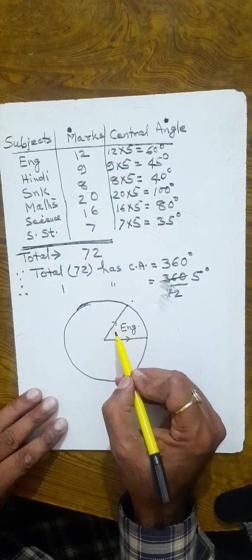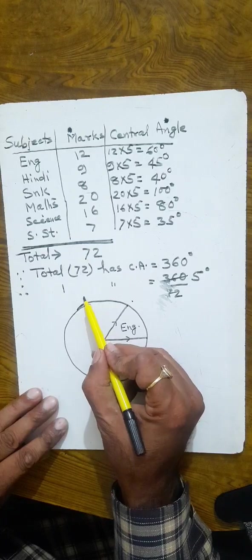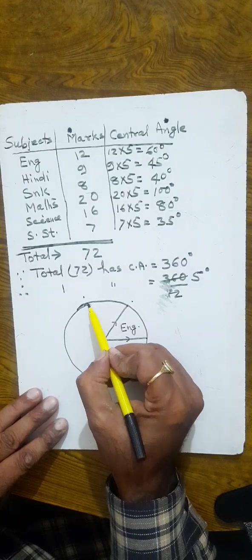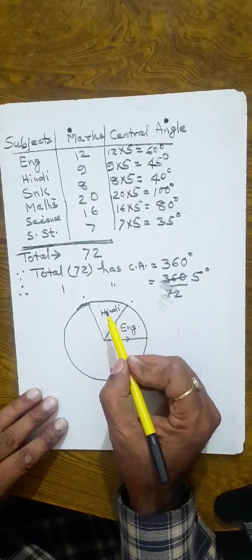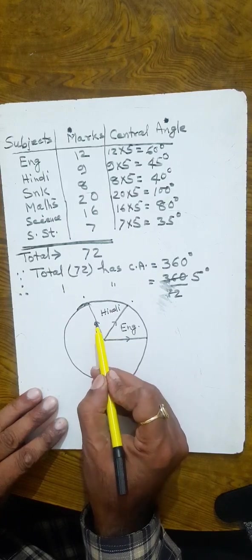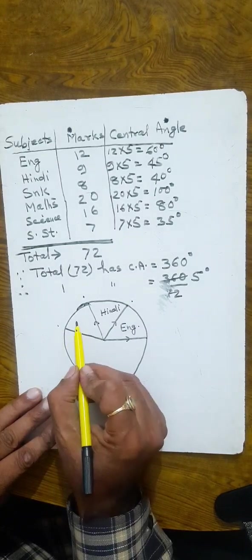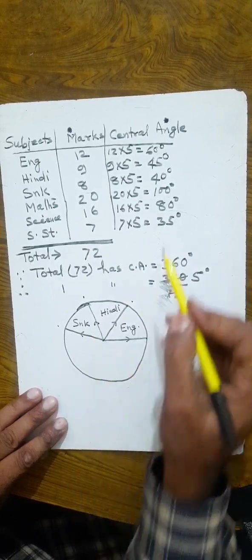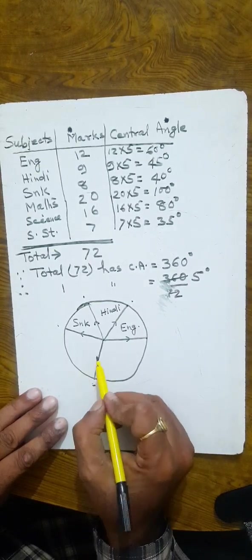On this line, on this radius, mark a 45 degree angle — this section is Hindi. Then mark a 40 degree angle from the next radius — this section is Sanskrit. Then mark the 100 degree angle — this section is Maths.